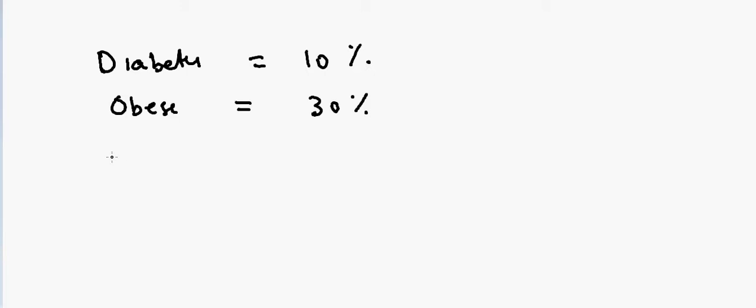Then how will you answer that question? So this is a case of non-mutually exclusive events because a person can get both diabetic and also be obese. So in that case, we have to consider the concept of overlapping.